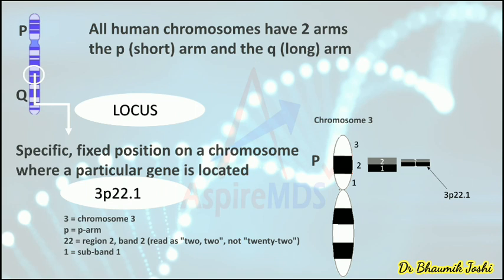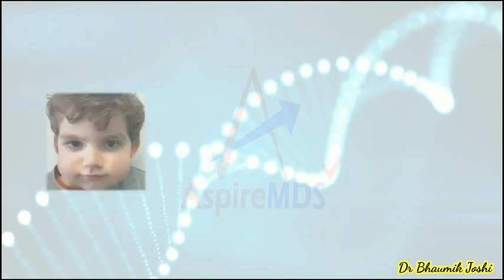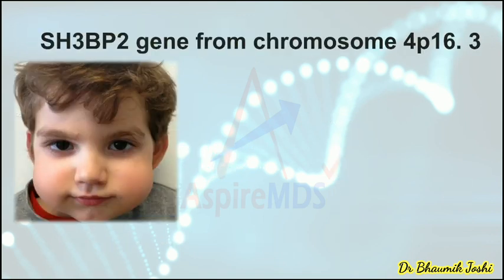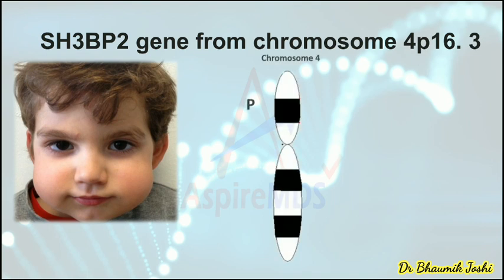Let's see another example. In cherubism the gene affected is SH3BP2 and it is located on chromosome 4p16.3. So we can tell that this gene is on chromosome number 4, on the P arm, in the first region, on the sixth band, and on the third sub-band within that band. That is how you read where a particular gene is located.